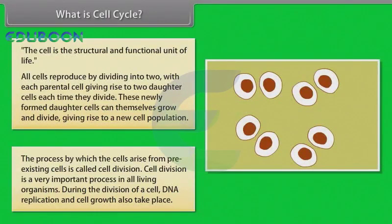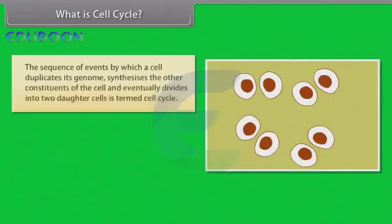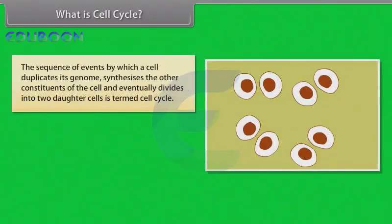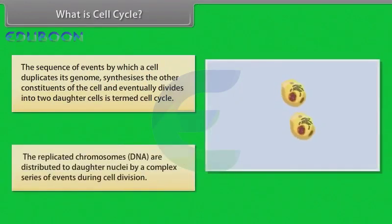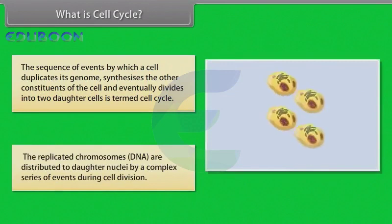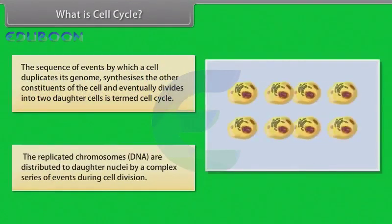During the division of a cell, DNA replication and cell growth also take place. Now let us know cell cycle. The sequence of events by which a cell duplicates its genome, synthesizes the other constituents of the cell, and eventually divides into two daughter cells is termed as cell cycle. The replicated chromosomes are distributed to daughter nuclei by a complex series of events during cell division.